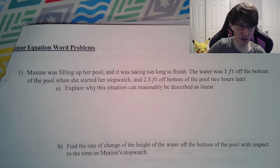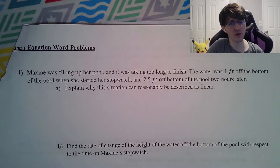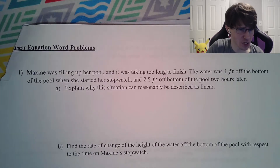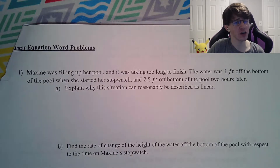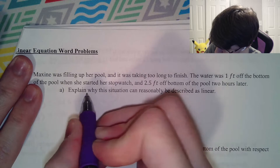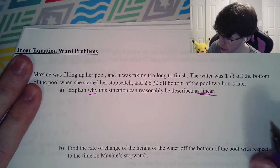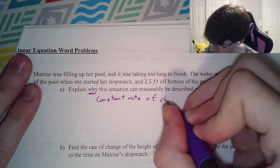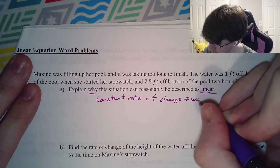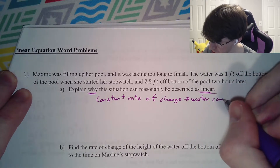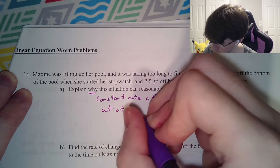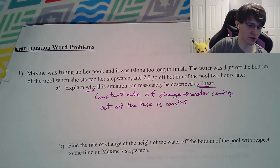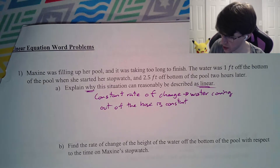Word problem number 1: Maxine was filling up her pool. The water was 1 foot off the bottom when she started her stopwatch and 2.5 feet off the bottom 2 hours later. Explain why the situation could be reasonably described as linear: it's because there is a constant rate of change — specifically, water coming out of a hose comes out at exactly the same rate the whole time.